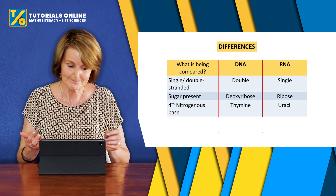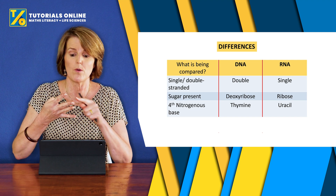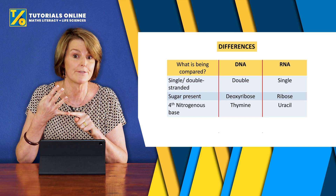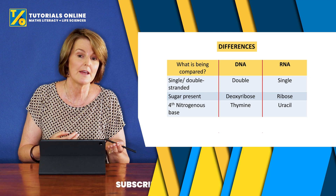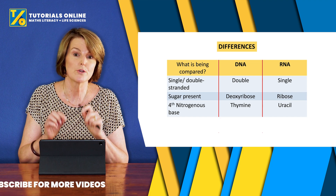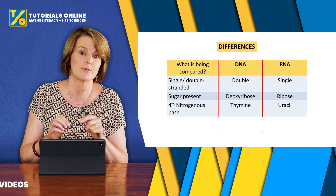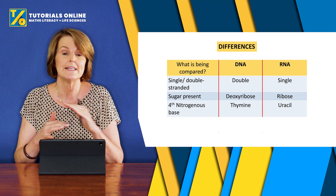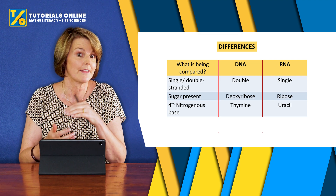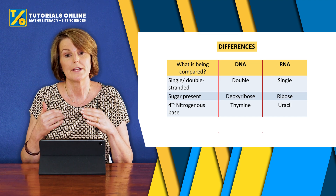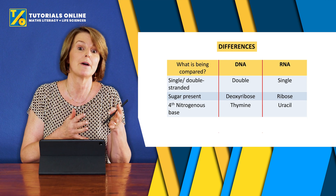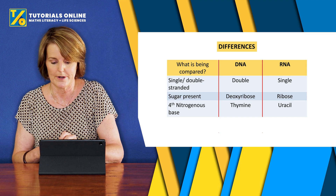Another difference is the fourth nitrogenous base. Remember they all have adenine, guanine, and cytosine, but the fourth one is different: in DNA it's thymine, and in RNA it's uracil. That fact is the most important one, and the one where people make the most mistakes — forgetting that thymine must be replaced with uracil when talking about RNA. When we speak about DNA, we speak about thymine. Remember that one.